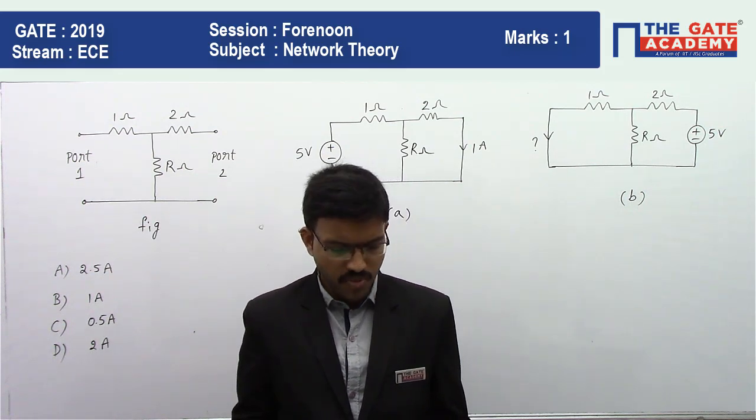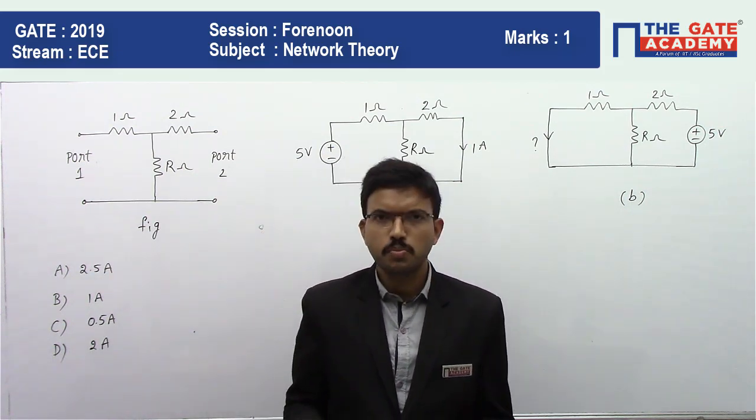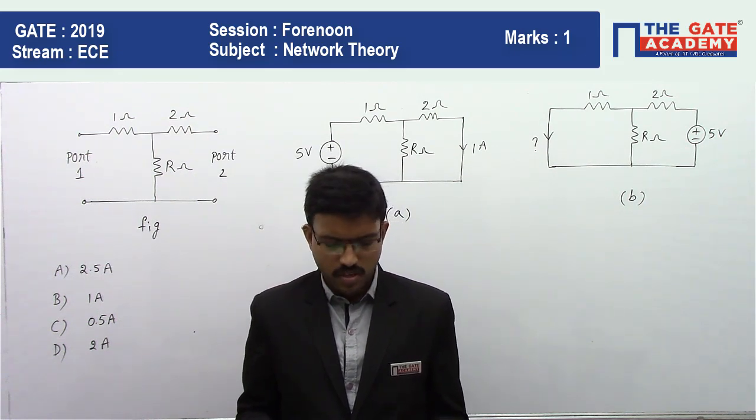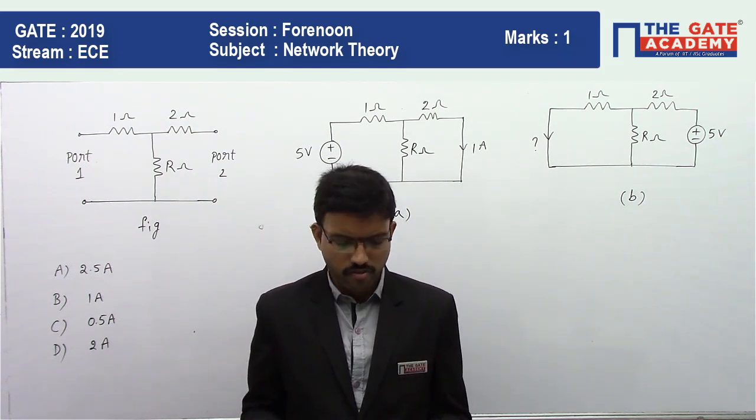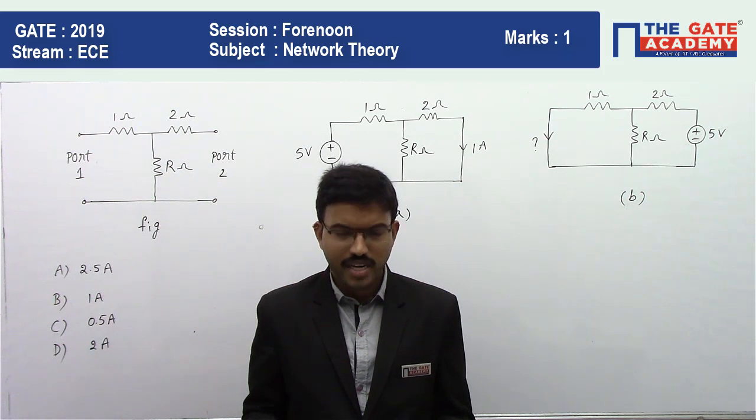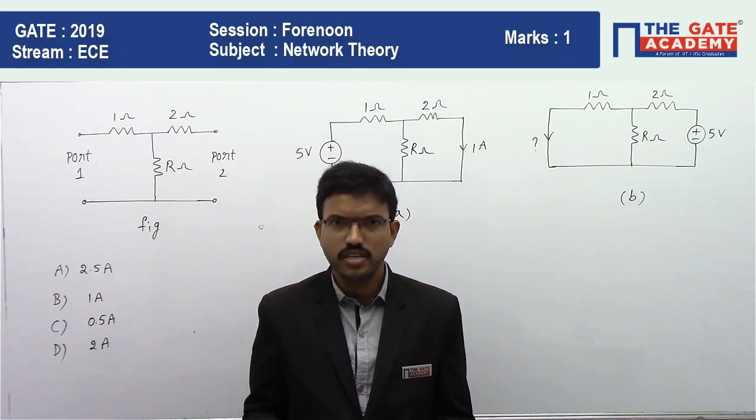First, let us read the question. Consider the 2-port resistive network shown in the figure. When an excitation of 5 volt is applied across port 1 and port 2 is shorted, the current through the short circuit at port 2 is measured to be 1 ampere as shown in the figure.